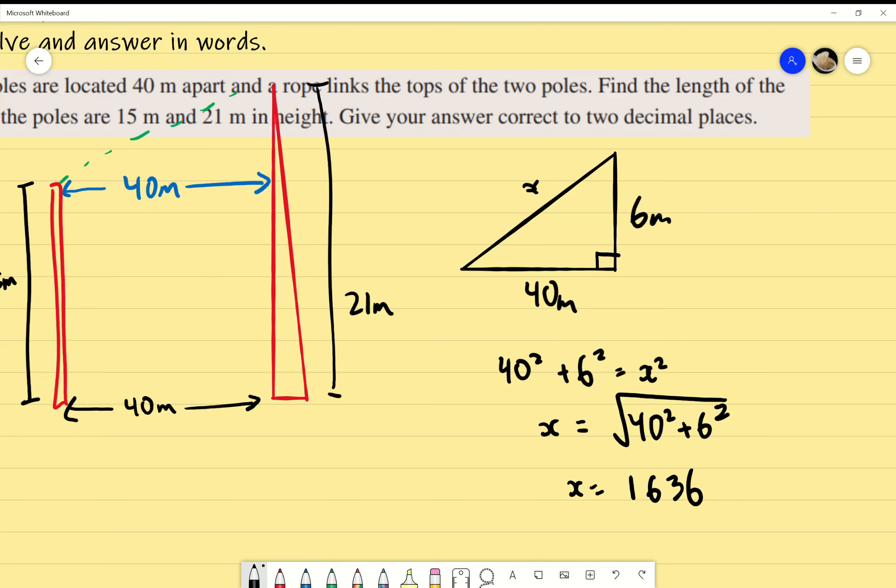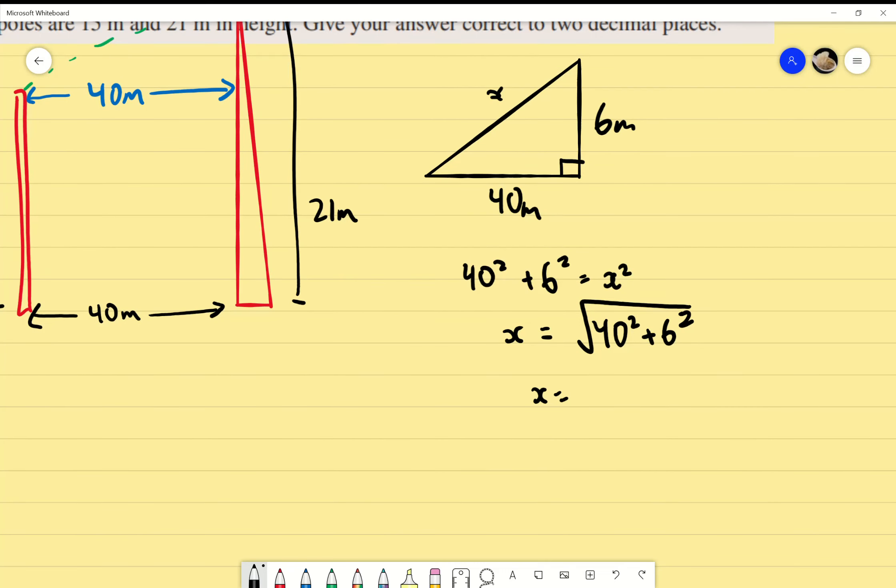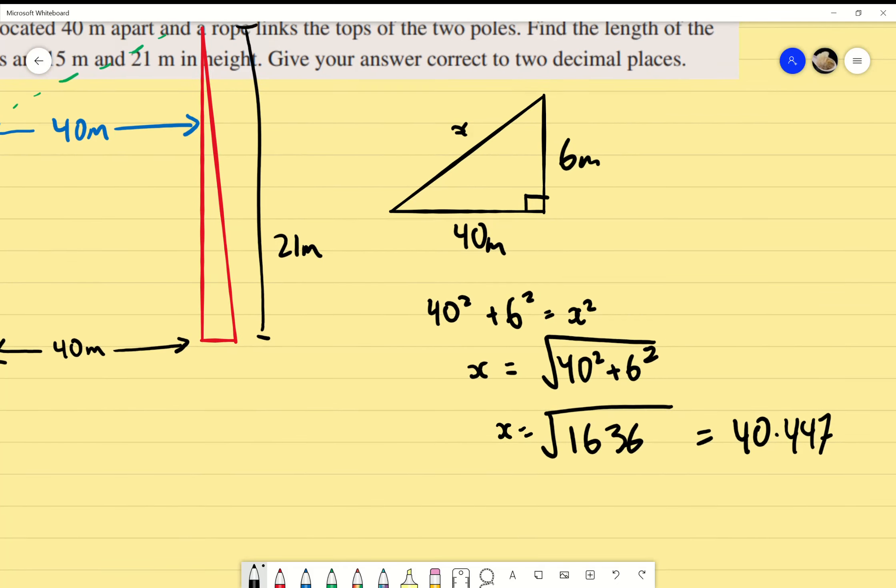Let's take it step by step. What's 40 squared? 1,600. And what's 6 squared? 36. So 1,600 plus 36 is 1,636. With the square root, what does that equal to? What's the square root of 1,636? 40 point... Can you give me the other decimals as well? We know that it's 40.447. The question says round to two decimal places. So you're right, it is 40.45 meters.